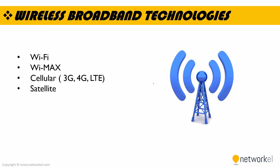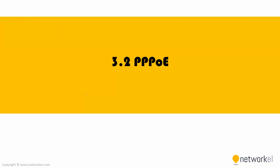Here are the wireless broadband technologies we use. We have Wi-Fi technology, WiMAX technology which can provide coverage to an area as large as 3,000 square miles, cellular technology which we use for mobile connections from our cell phones using the ISP's base stations, and satellite technology, which is a really expensive technology.